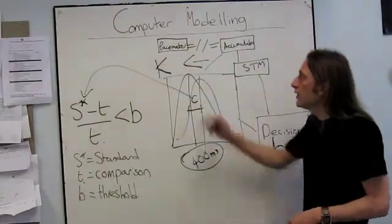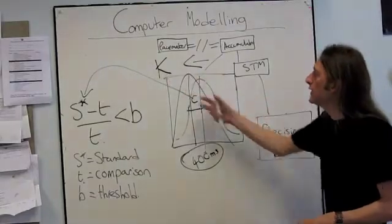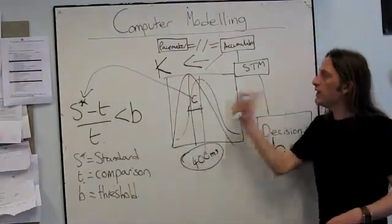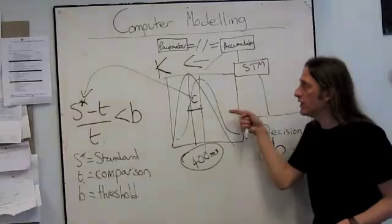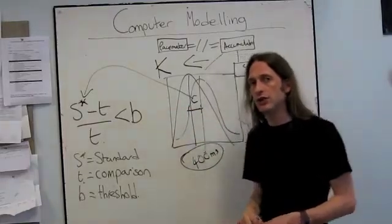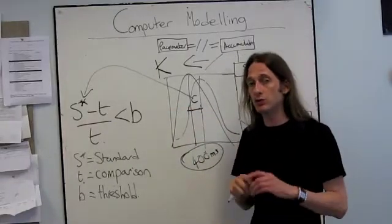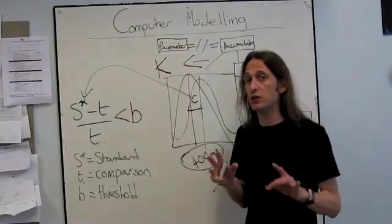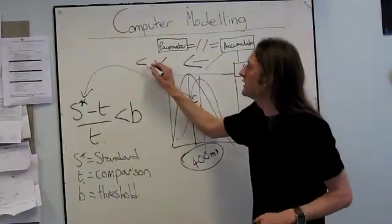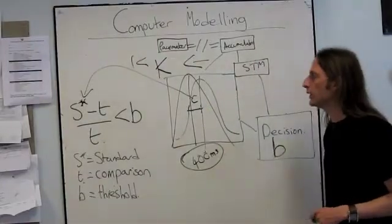If K is larger than 1, then it shifts the distribution this way; if it's less than 1, it shifts it that way. And if you go back and look at the lecture slides when I talked about the children data — modelling the children data — then you need a K value that's less than 1 in order to model it.